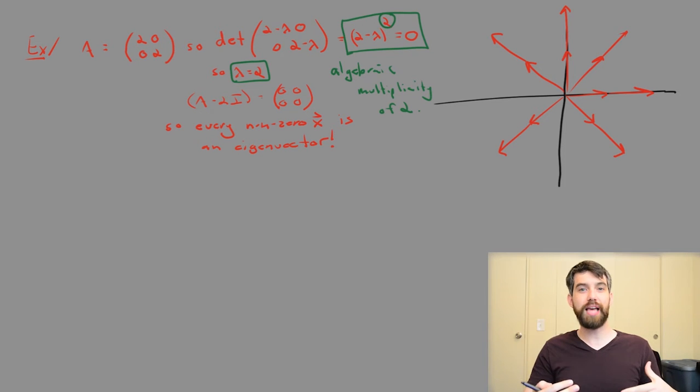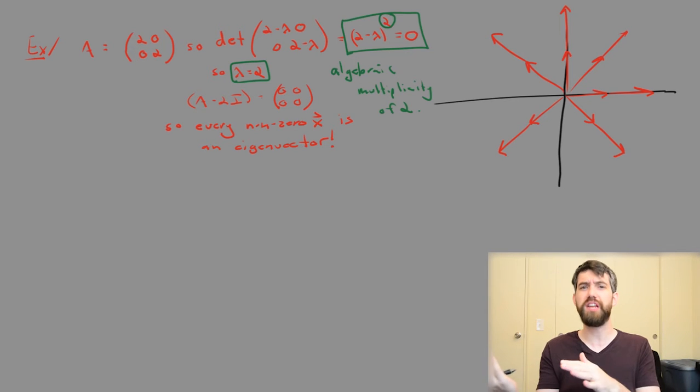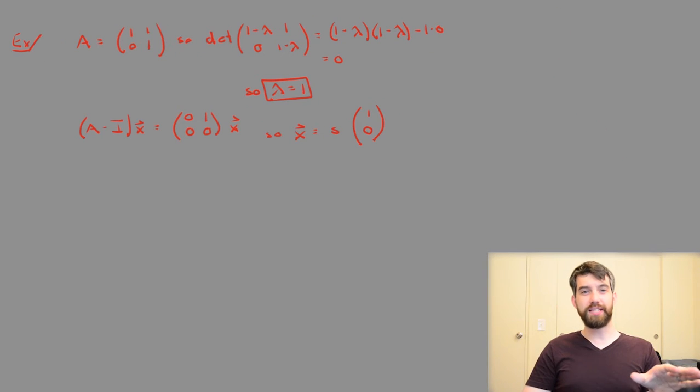And then contrast that with the previous example where you got two different eigenvalues and gave you two different linearly independent eigenvectors. Either way, you had this sort of basis of eigenvectors. So note that for the moment. We're going to come back to that point in a few videos from now. This next example, however, turns things on its head a little bit.